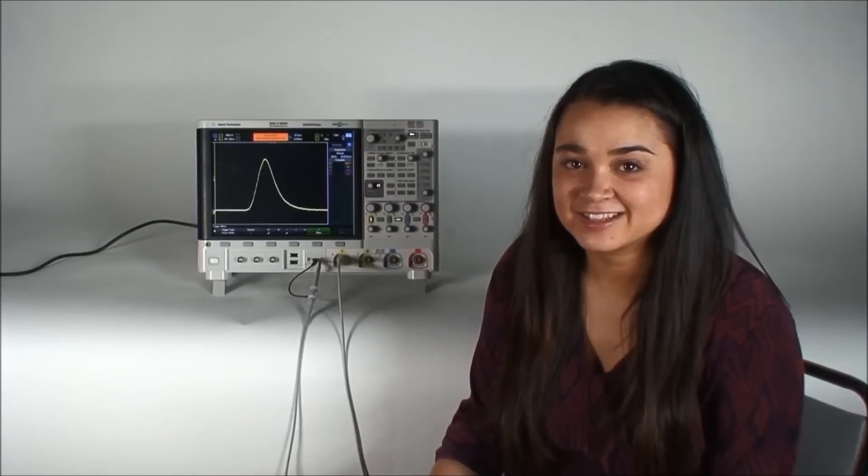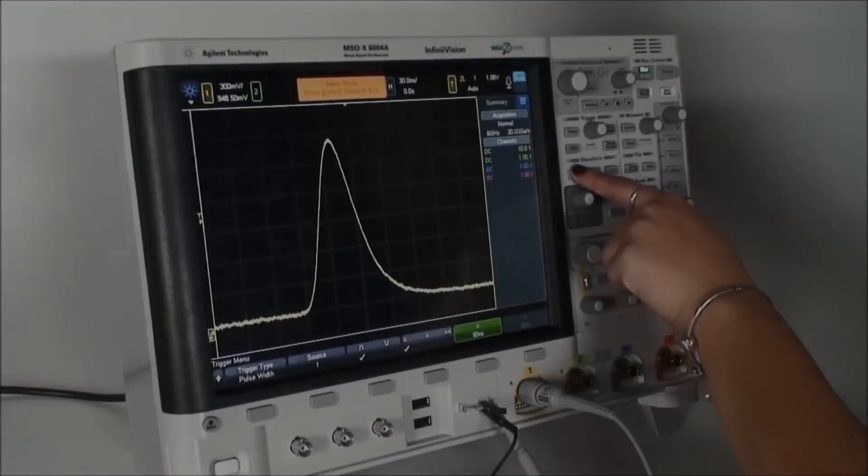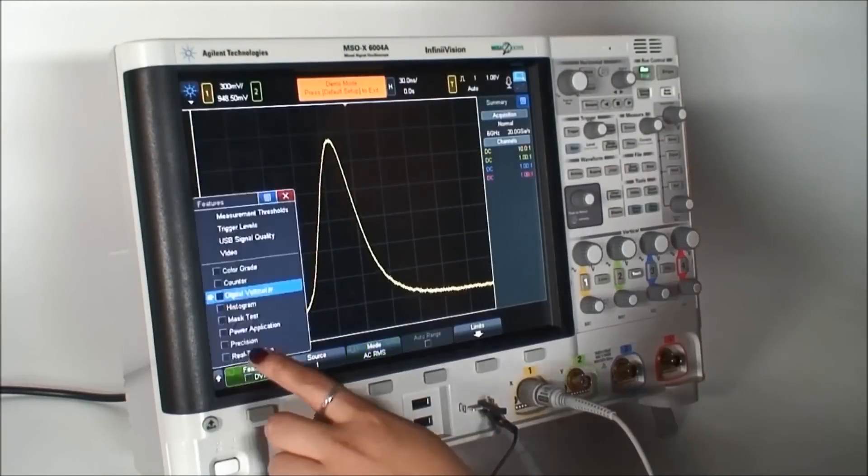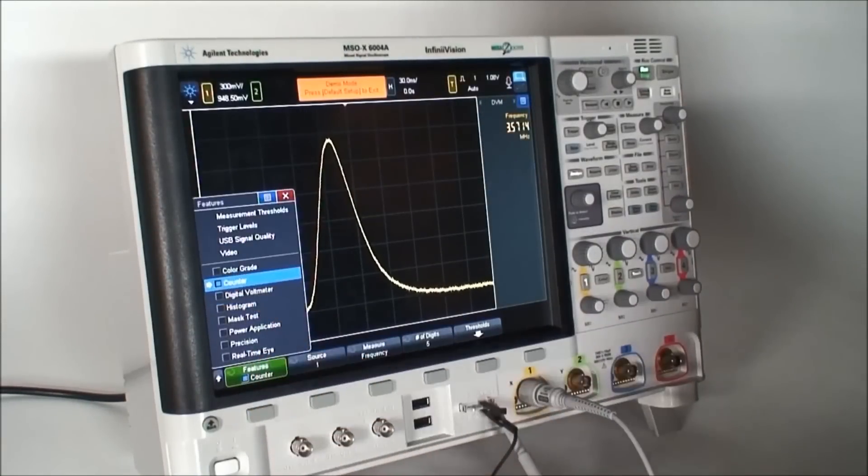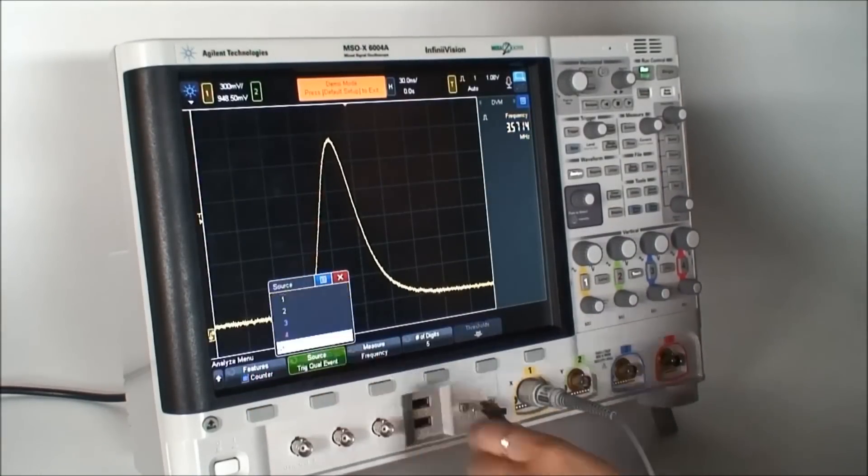Now that we have seen how to isolate the glitch, let's look at a few ways to determine how often it is occurring. Let's use the 6000x series built-in counter. First, let's press analyze, and in the features menu, select counter. We can set the source to be a trigger qualified event, and select measure frequency.